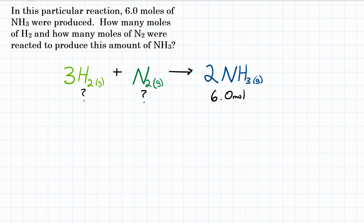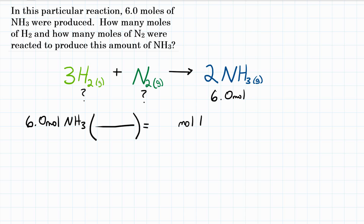This is a moles-to-moles stoichiometry problem. We're going to take the 6.0 moles of NH3 and convert that by using a conversion factor to moles of H2. We're also going to do that exact same thing to calculate moles of N2. So let's do the first problem — let's find out how many moles of H2 must have reacted. We're starting with moles of NH3.